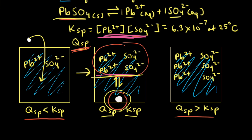That concept helps us understand what happens when Qsp is greater than Ksp. When Qsp is greater than Ksp, the solution is oversaturated — it's exceeded the limit of what can dissolve. Therefore, you can imagine some lead two plus ions combining with some sulfate ions to form a precipitate. When Qsp is greater than Ksp, a precipitate will form. The precipitate will continue to form until Qsp is equal to Ksp and the system reaches equilibrium.